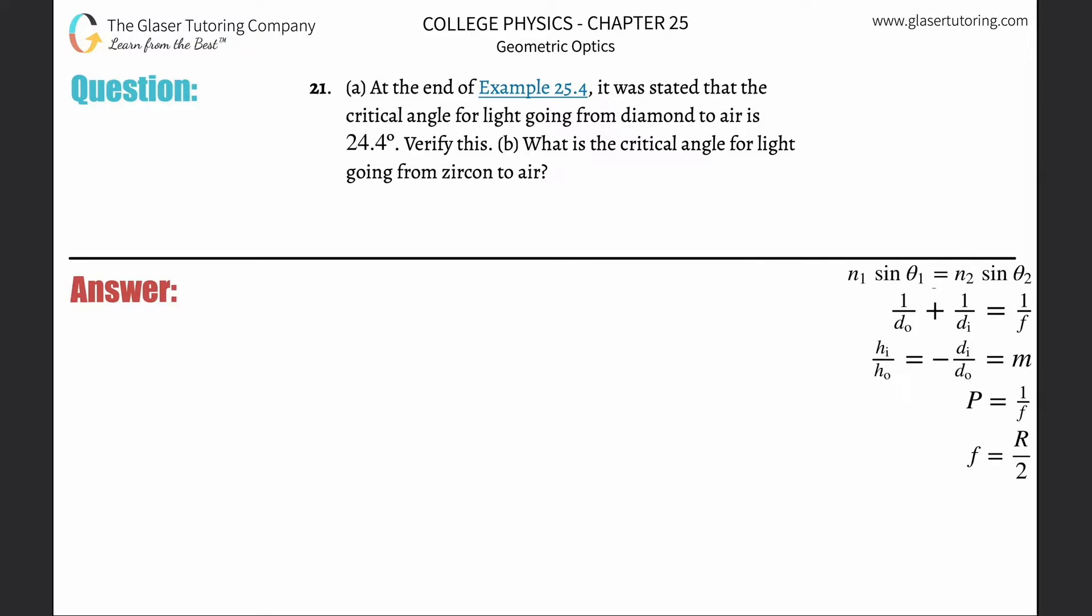Number 21, at the end of example 25.4, was stated that the critical angle for light going from diamond to air is 24.4 degrees. Verify this. Alright, so take a look at number 20, the problem number 20.